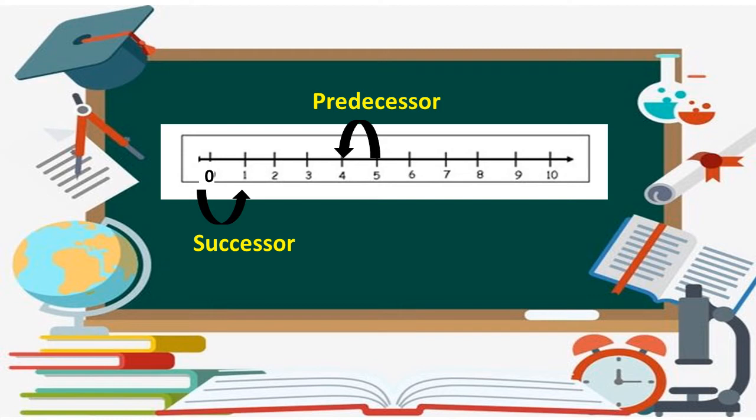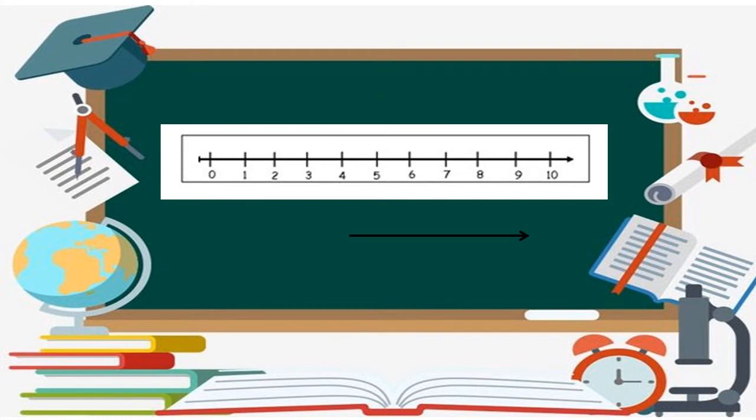Number one comes after number zero. Similarly, number seven is the predecessor of number eight and number eight is the successor of number nine. We can say that each and every whole number has a successor.